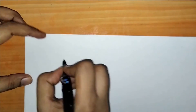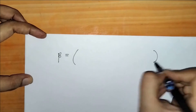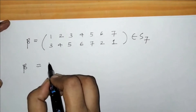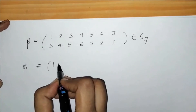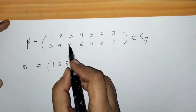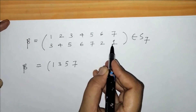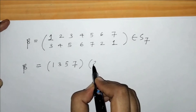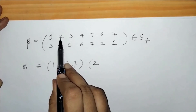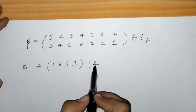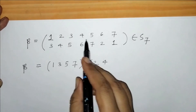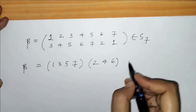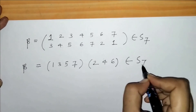Again, let's take one more example: permutation beta for the set S7 in cyclic notation. Here 1 maps to 3, 3 maps to 5, 5 maps to 7, 7 maps to 1 — so the cycle (1, 3, 5, 7) is complete. For the remaining elements, starting with 2: 2 maps to 4, 4 maps to 6, 6 maps to 2 — so cycle (2, 4, 6) is complete. We have 7 elements total, so this permutation belongs to S7.